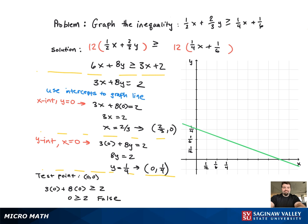which means we're not going to shade the region that has 0, 0. So the test point 0, 0 is being identified. We're not going to shade that region because it was false. And that's it.